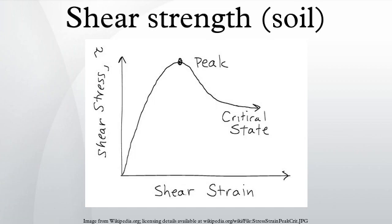Factors controlling shear strength of soils: the stress-strain relationship of soils, and therefore the shearing strength, is affected by soil composition — mineralogy, grain size and grain size distribution, shape of particles, pore fluid type and content, ions on grain and in pore fluid. State is defined by the initial void ratio, effective normal stress and shear stress.